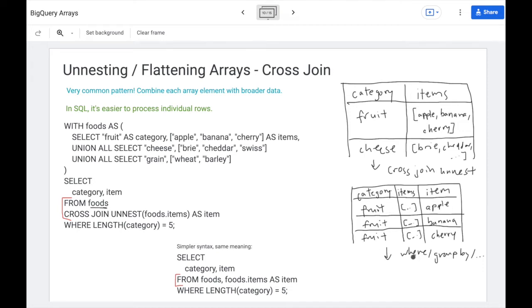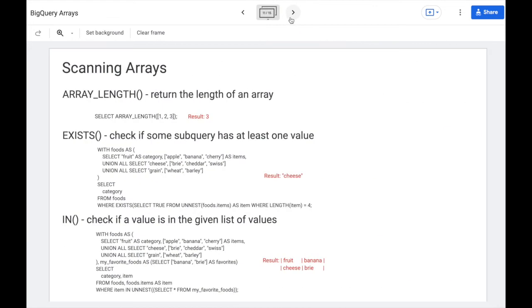But now we'll have each individual array element next to that broader piece of data. From there you can use where, group by, whichever other keywords you're interested in. This pattern is so common that there's a very simple syntax you can use instead. You can just use a comma to get rid of this cross-join unnest part. So you can say select category item from foods, foods.item to get that pair of the broader data and the more specific data.